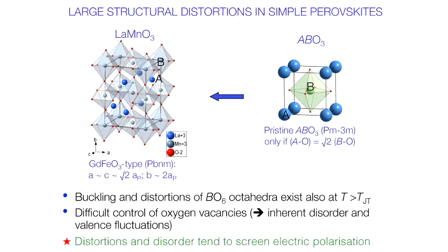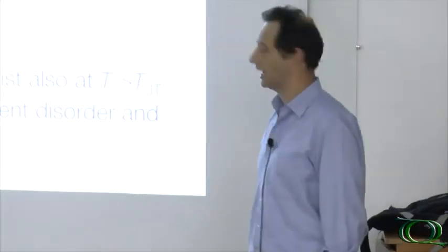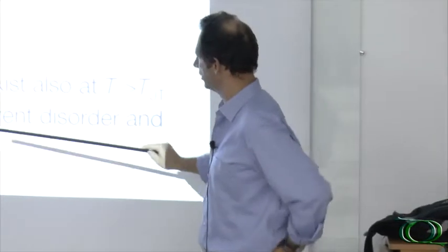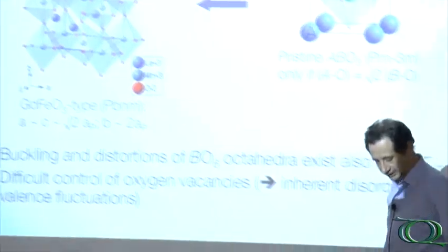Second, it's difficult to control the oxygen vacancies due to the coordination. The high coordination number of the A-side makes it quite easy to create vacancies, and this creates inherent disorder and valence fluctuations. If you take out an oxygen, this will affect the valence of the transition metal ions.